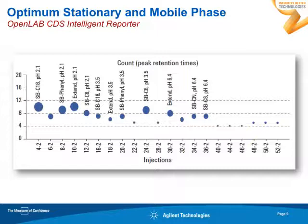You can also get all the chromatographic data in tables, starting with the separation having the highest number of found peaks and going down. You can then simply check which separation condition is most promising for fine-tuning.